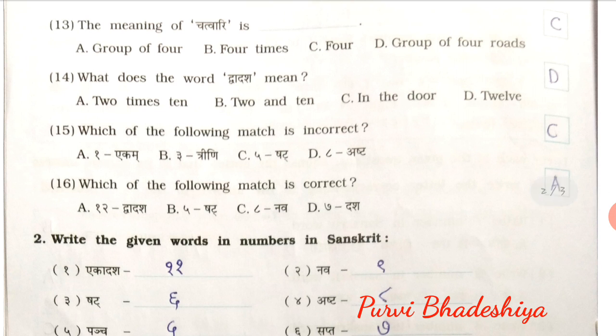13th number MCQ: The meaning of word Chetwari is C — 4. 14: What does the word Vardash mean? So the answer is D — 12. 15: Which of the following match is incorrect? So the answer is C — Shatter. 16: Which of the following match is correct? So the answer is A — Dwardash.